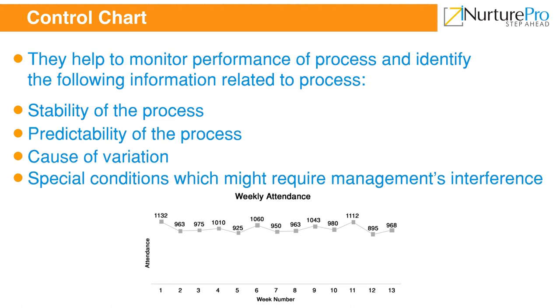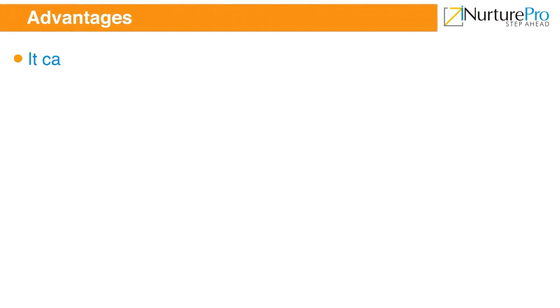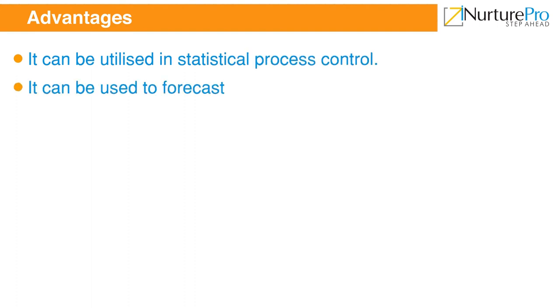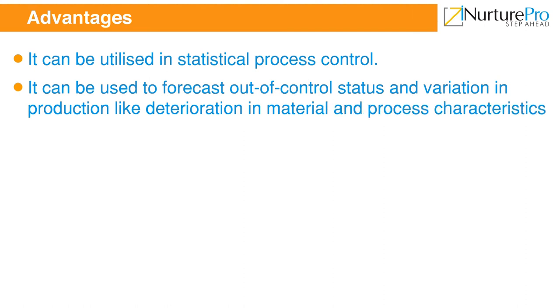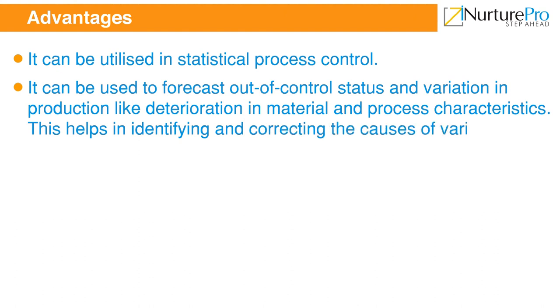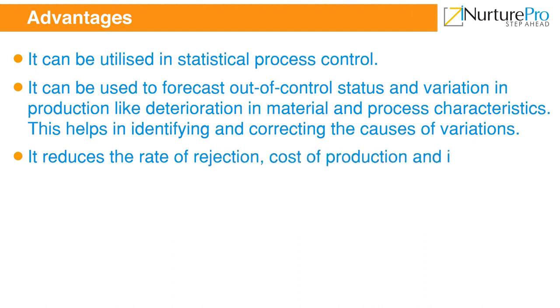A few advantages of control charts are: one, they can be utilized in statistical process control; two, they can be used to forecast out-of-control status and variation in production, like deterioration in material and process characteristics, helping to identify and correct the cause of variations; three, they reduce the rate of rejection, cost of production, and inspection.